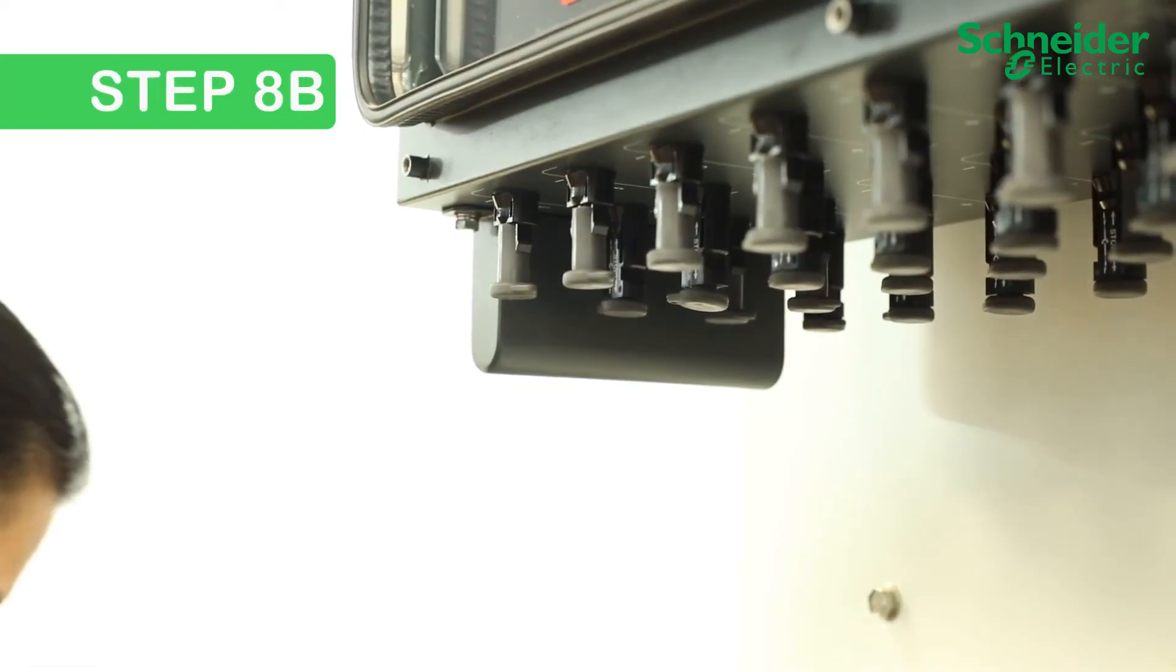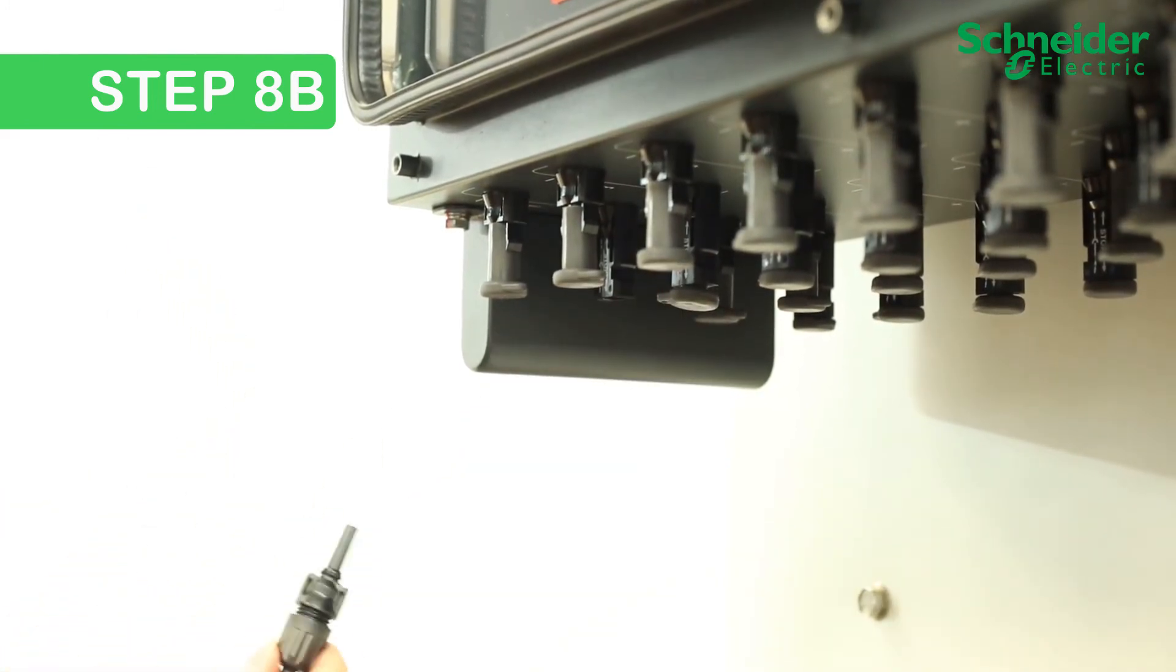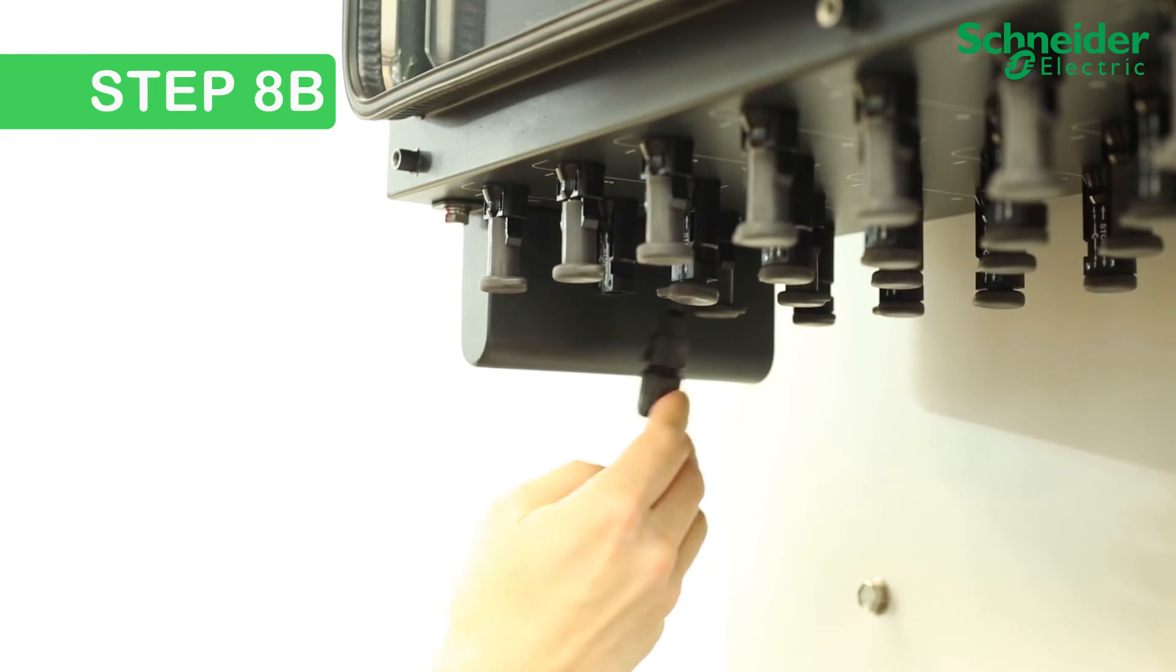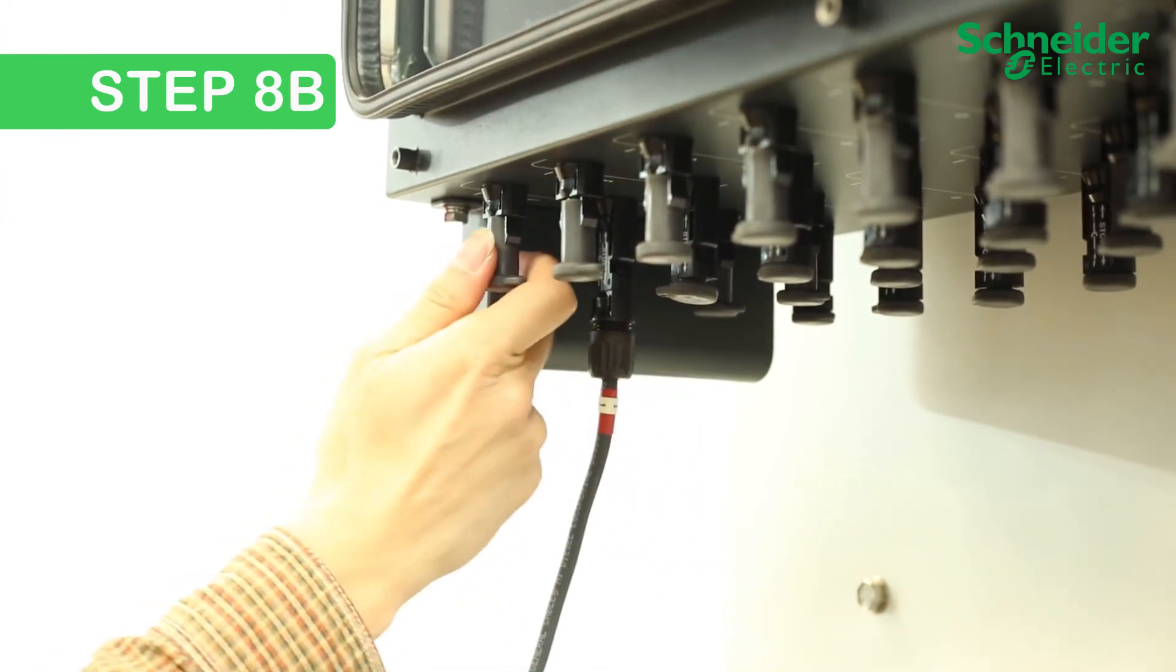Step 8b: Adding inline fuses to the CL60E. The CL60E includes 15-amp fuses in the positive leg. Install your positive PV string connection directly to the CL60E.